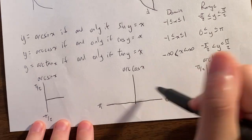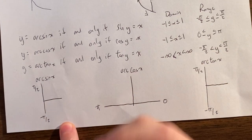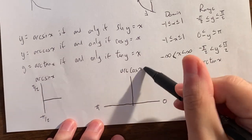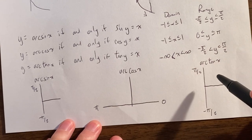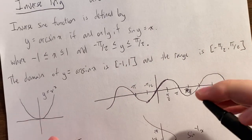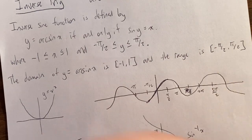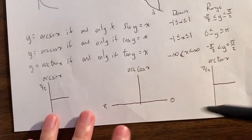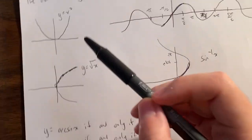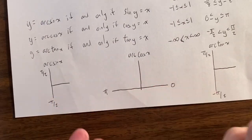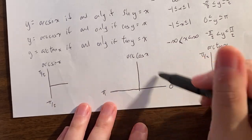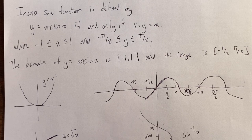Here are the three main inverse trig functions. Arc sine of x: answers must be between negative pi over 2 and pi over 2. For arc cosine of x, answers must be between 0 and pi. For arc tan of x, it's also between negative pi over 2 and pi over 2. Because there are infinitely many angles whose sine equals a given value, we need to choose a particular one that fits within these intervals. This is analogous to square root of x always giving a positive answer.